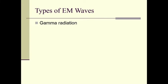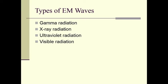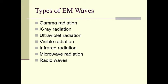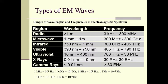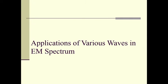We have seen different types of electromagnetic waves such as gamma radiation, x-ray radiation, ultraviolet radiation, visible radiation, infrared radiation, microwave radiation, and radio waves. We can see the ranges of wavelengths and frequencies in the electromagnetic spectrum, ranging from 0.01 nanometers to a few kilometers in the case of long radio waves. Let us now study the applications of various waves in the electromagnetic spectrum.